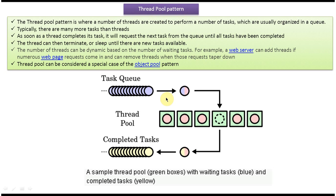This ThreadPool Design Pattern has three important components. One is Task Queue, another one is ThreadPool, and another one is Completed Task Queue.